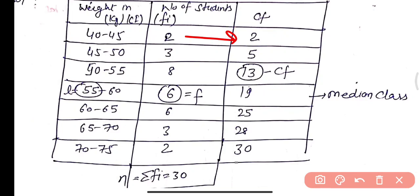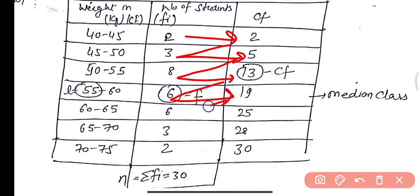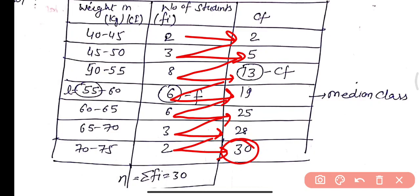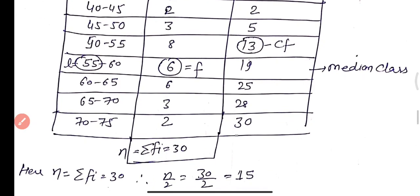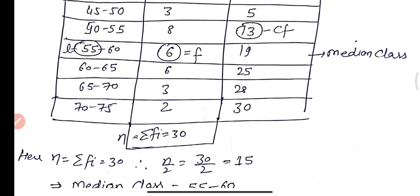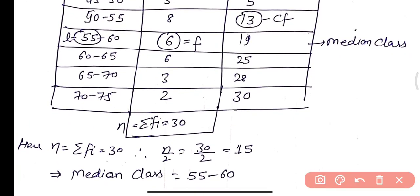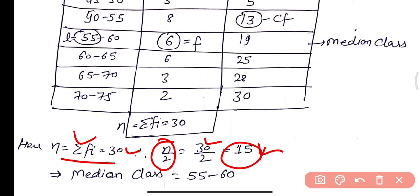We form the cumulative frequency column. The first entry is 2. Then 2 + 3 = 5, 5 + 8 = 13, 13 + 6 = 19, 19 + 6 = 25, 25 + 3 = 28, 28 + 2 = 30. The last entry is 30, which equals n. So n = 30 and n/2 = 15.